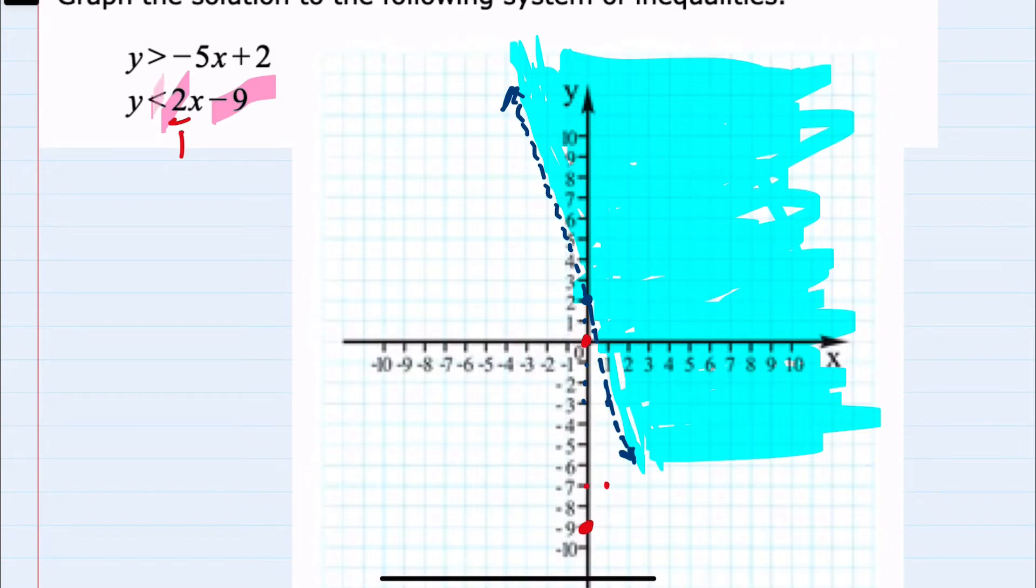Again, this inequality does not have an equal to sign underneath it. So I'll need to connect these points in a dotted line. And since (0,0) is still not on this line either, I'll use that as a test point. And when substituting, I would have 0 < 2(0) - 9.